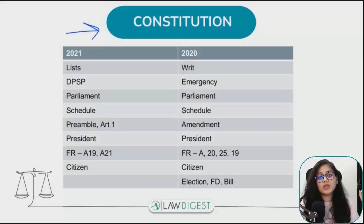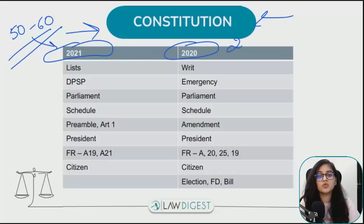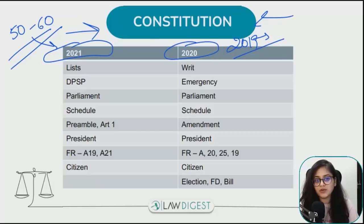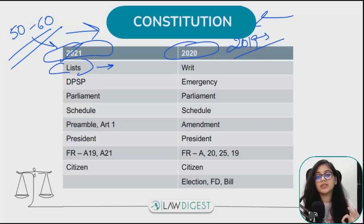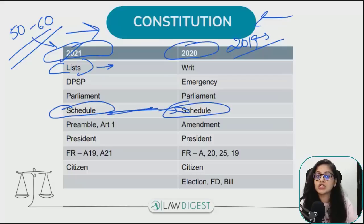Starting with the first topic - Constitution. Constitution एक बहुत important topic है। I always tell you that constitution से about 50 to 60 questions range कर जाते हैं, depending on the pattern of 2021, 2020, and even 2019. Constitution में तीन lists बहुत important हैं - Union, Concurrent and State list - ये आपको याद रखनी बहुत जरूरी है, Schedule 7 में given है। Schedules 2020 में भी पूछे गए हैं - schedules are very important.